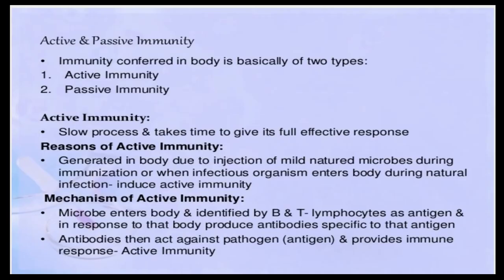Welcome to the seventh video session of the chapter Human Health and Disease. In this module we are going to deal with active and passive immunity, immunization, and vaccination. A body has two types of immunity: active and passive immunity.